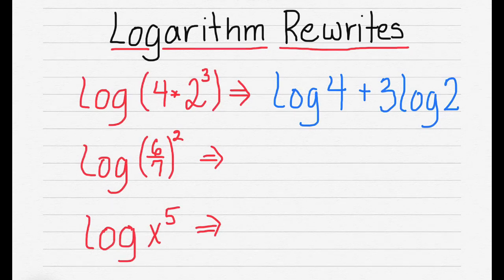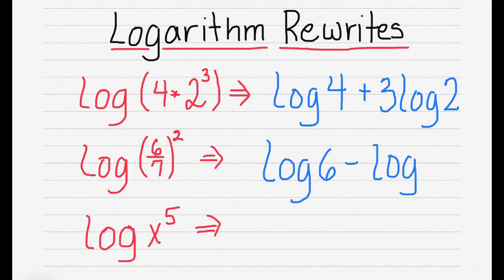The next one is a division problem, so we're going to use the quotient rule. So we're going to subtract log 7, and we have to apply our power rule to both, because the 2, the square, is on both of them.